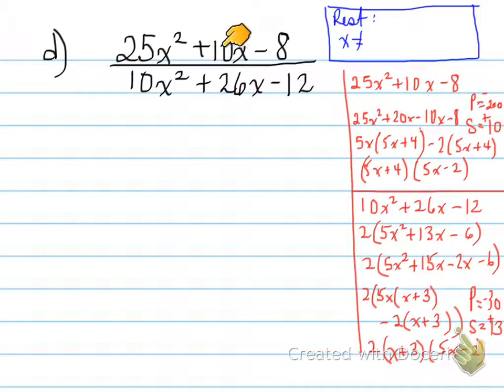So 25x squared plus 10x minus 8. What does that mean? Well, we need a product of negative 200 and a sum of 10. What two numbers multiply to give you negative 200 and add to give you 10? Well, we need 20 and negative 10.